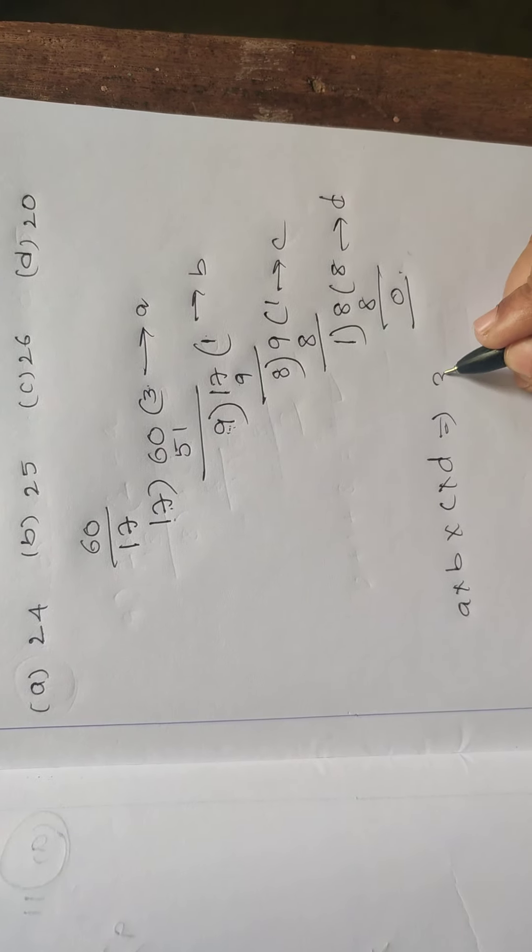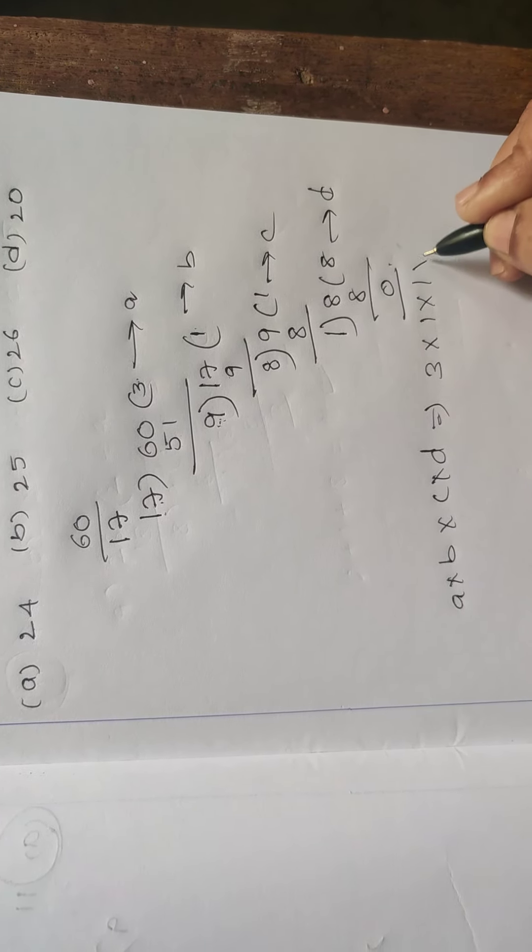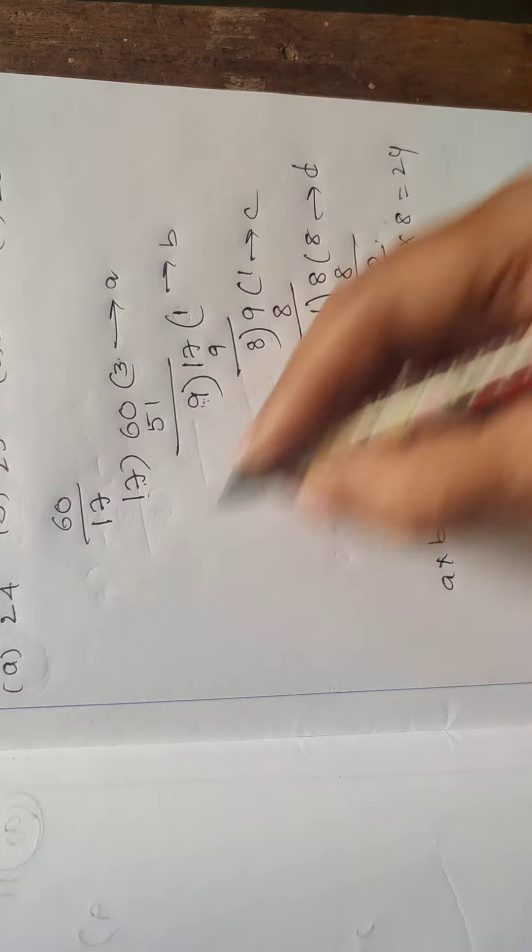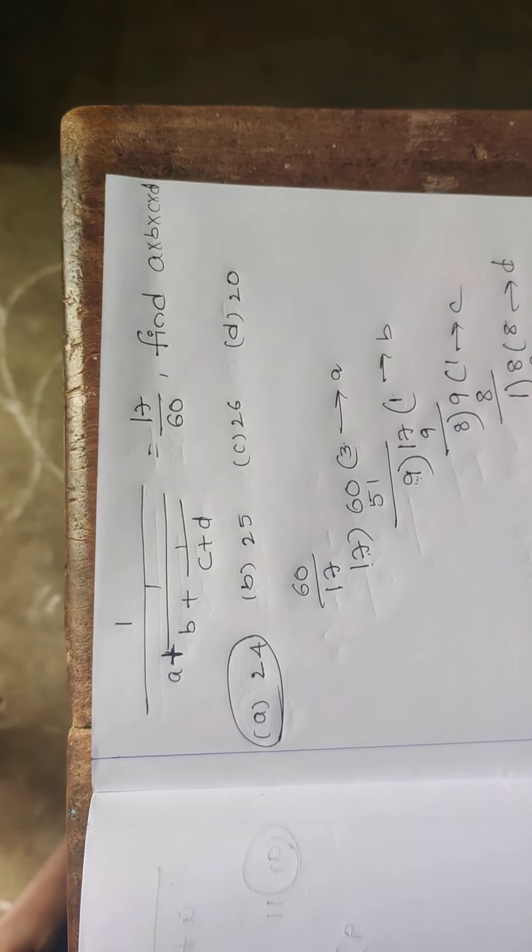So the answer is 3, 3 into 1 into 1 into 8 and D. That is equal to 24. This is the answer to me. So this is the answer to 15.